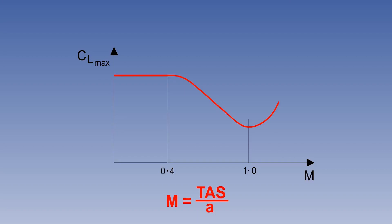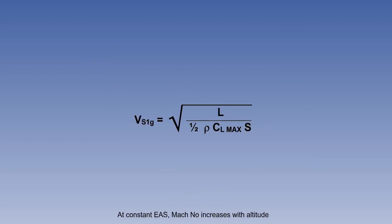Mach number is proportional to TAS and inversely proportional to the local speed of sound, or A. As an equation, M equals TAS over A. At a constant EAS, Mach number will increase with altitude.